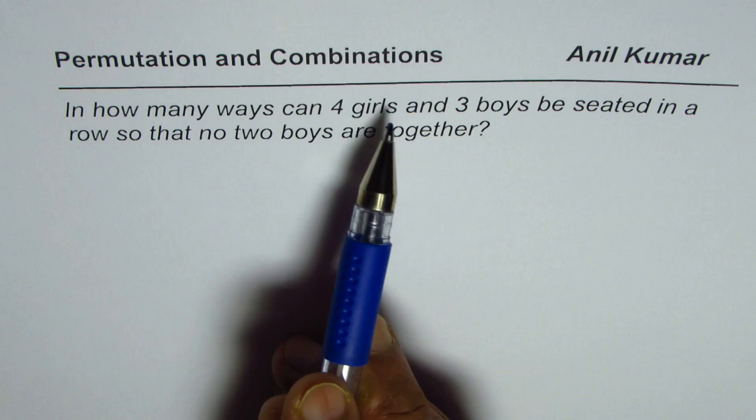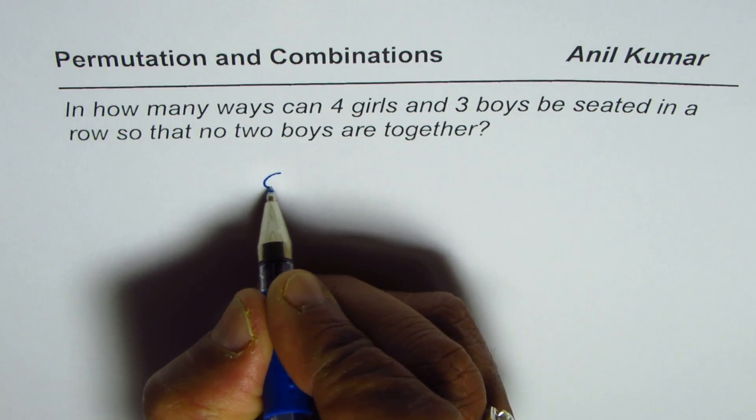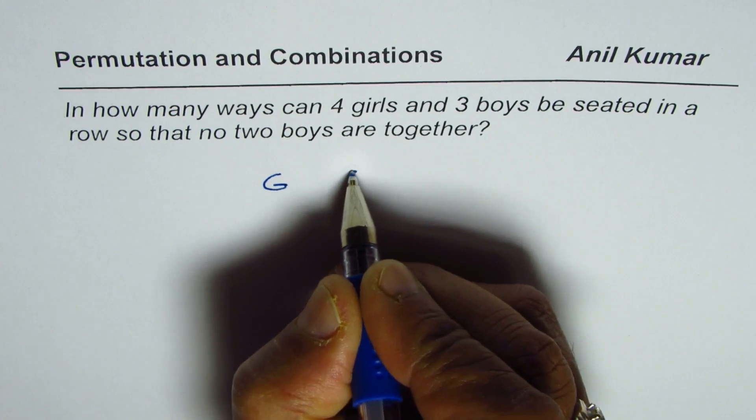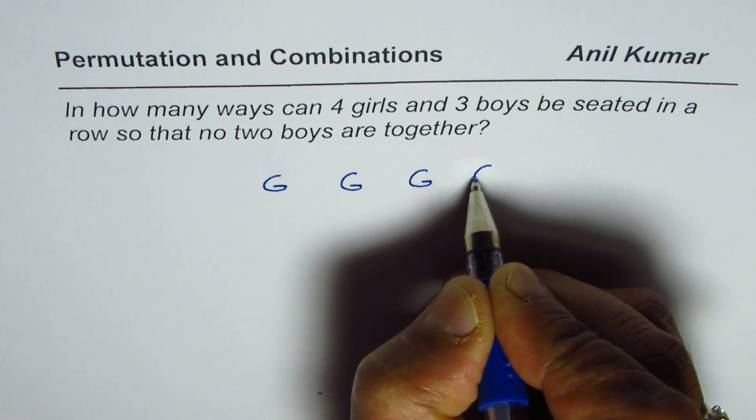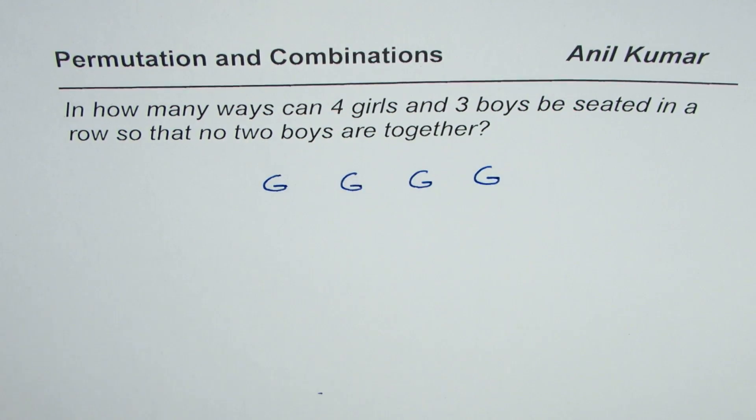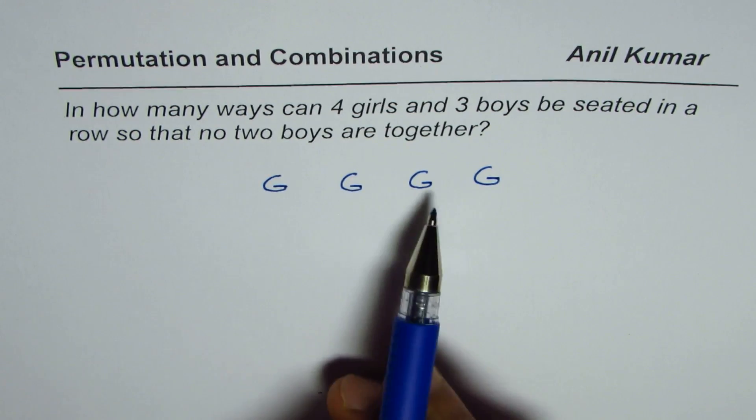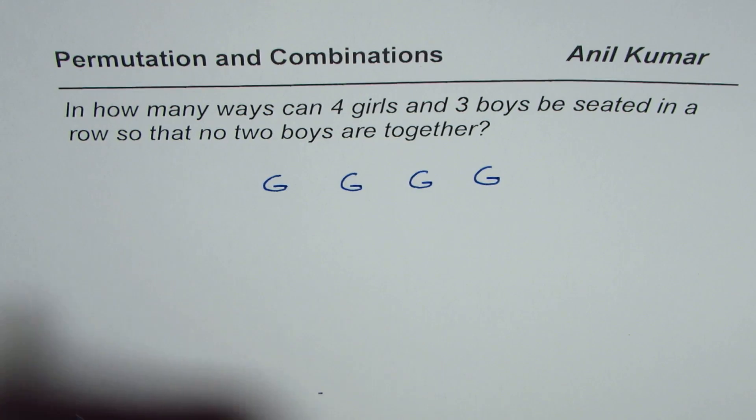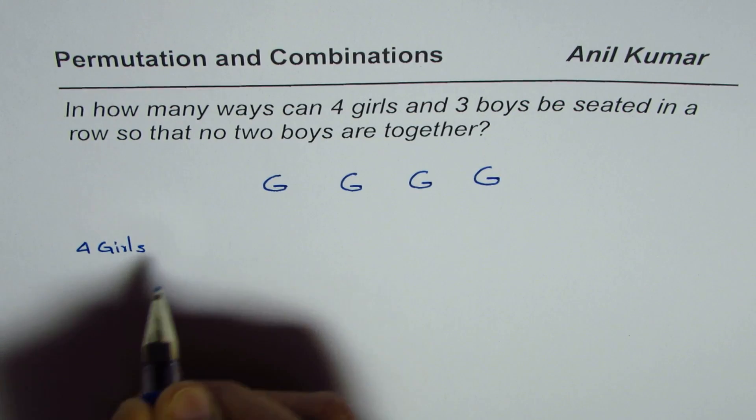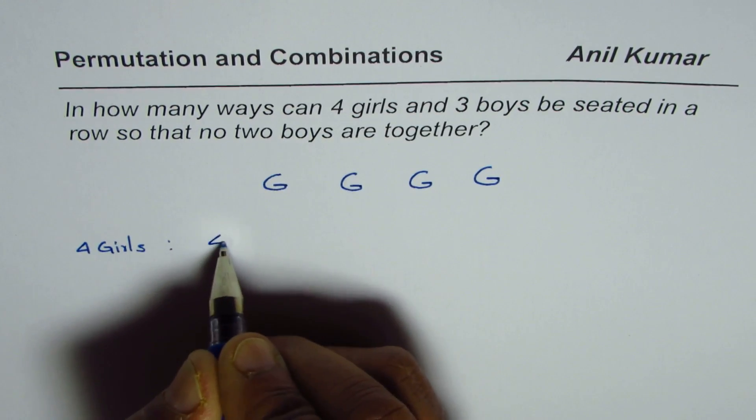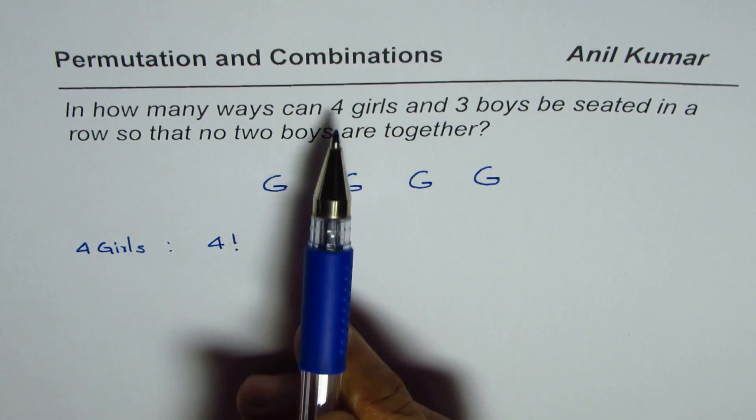Let's first see how many ways four girls can be arranged. Let me write down G for girls, so these are the four girls. The number of ways in which four girls can be arranged is four factorial. So four girls can be arranged in four factorial ways.